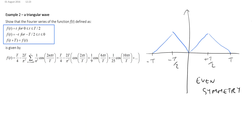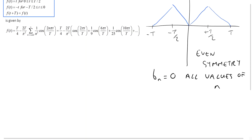What we know from the lectures is that if we have a function with even symmetry, then bn has to be equal to 0 for all values of n. So there are no sine components in the Fourier series of this function. All we have to do is calculate the values of a0 and also the an components.